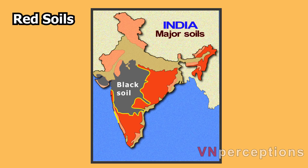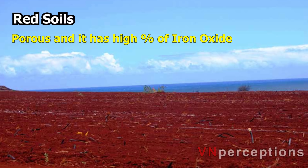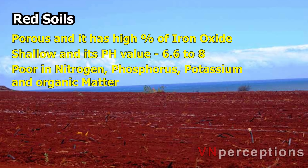Red soil extends northward in the west and along the Konkan coast of Maharashtra. Its characteristics are: it is porous with a high percentage of iron oxides, generally shallow, with a pH value ranging from 6.6 to 8. It is poor in nitrogen, phosphorus, potassium and organic matter. It is not fertile but responds to fertilizers, needs irrigation support for cultivation, and contains soluble salts in small quantities.